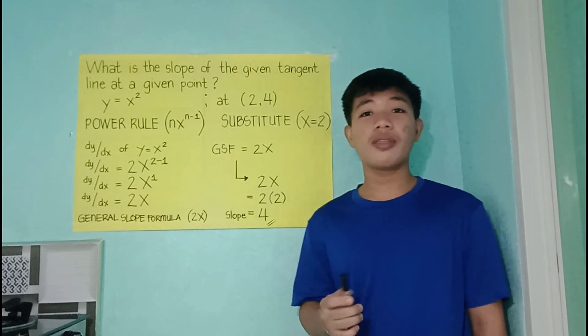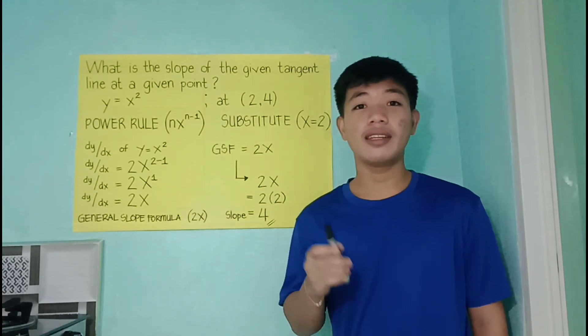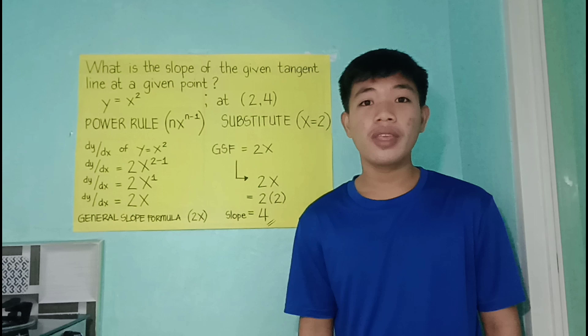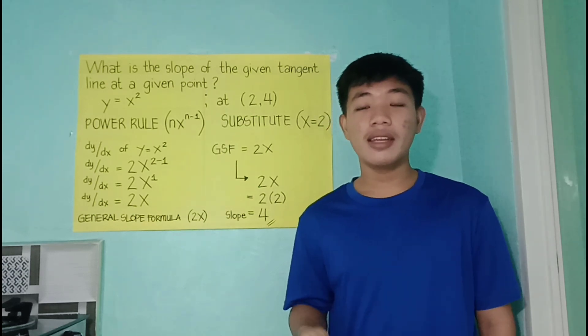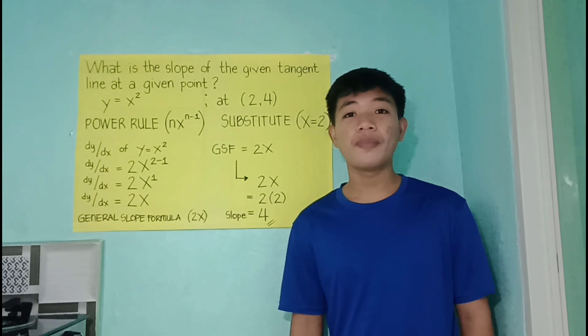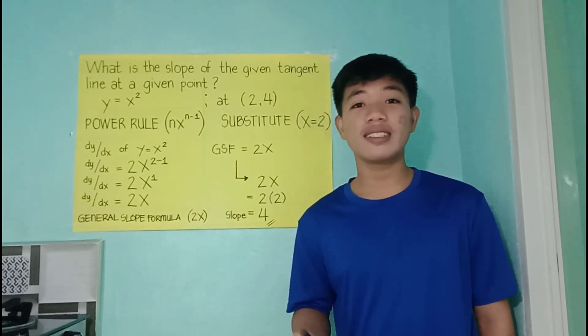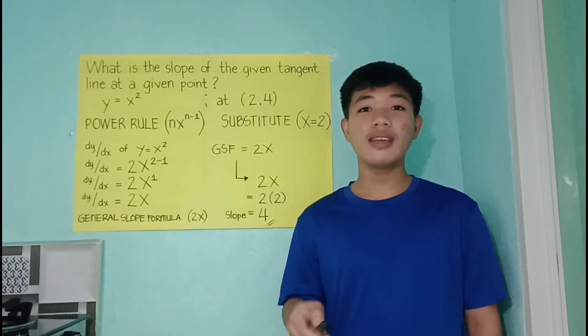The first thing to do is to find the derivative of y equals x squared because we know the fact that derivative is also known as the general slope formula or a formula that will give us the exact value of the slope.